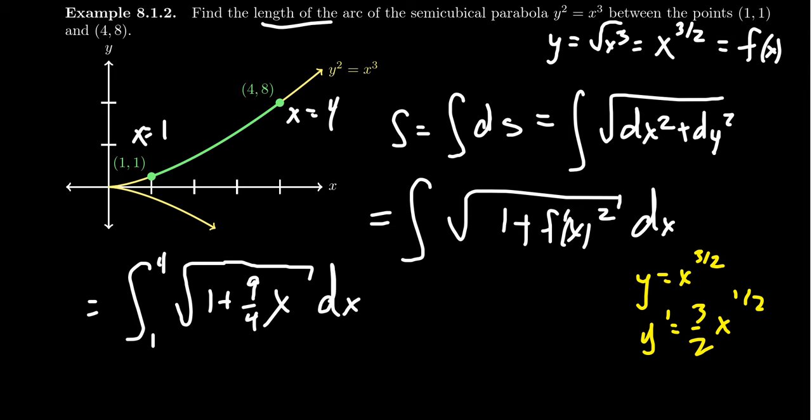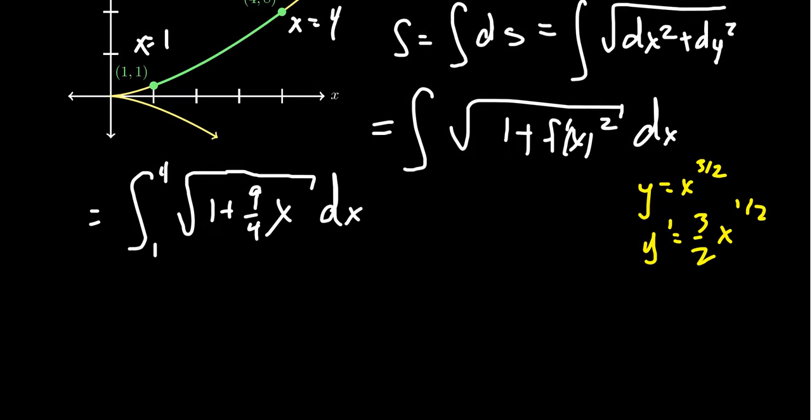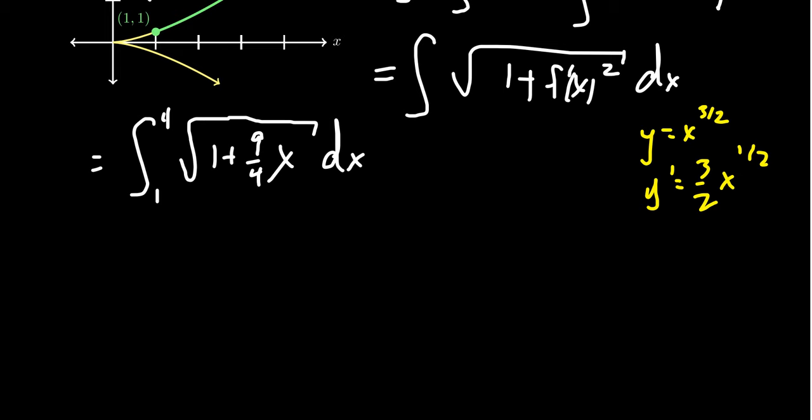One thing you're going to notice from this example is that we chose the semicubical parabola exactly for the reason that when you put it into the arc length formula, this turns into a very doable calculation, right? We can find the antiderivative here.